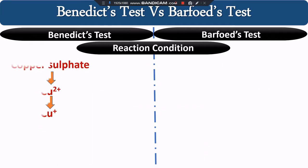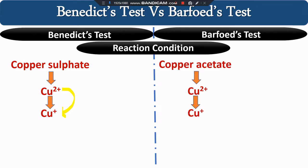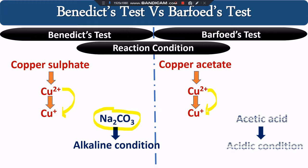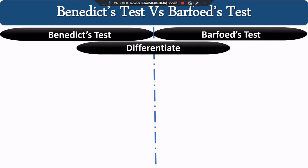Regarding reaction conditions: copper sulfate provides Cu²⁺, which is reduced to Cu⁺ in alkaline conditions in the Benedict test. In the Barfoed test, copper acetate provides Cu²⁺, which is reduced to Cu⁺ in acidic conditions. The alkaline environment in the Benedict test is provided by sodium carbonate, while the acidic environment in the Barfoed test is provided by acetic acid or glacial acetic acid.